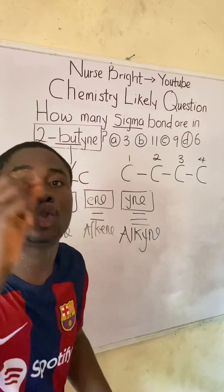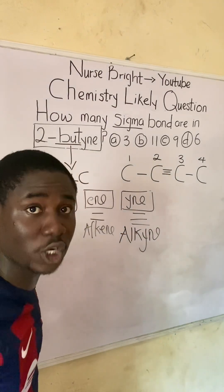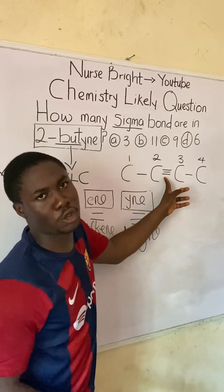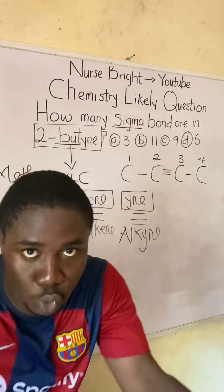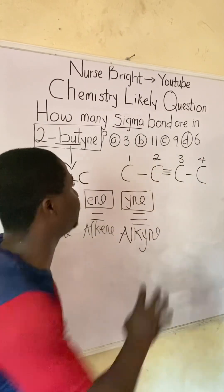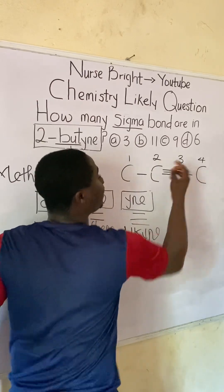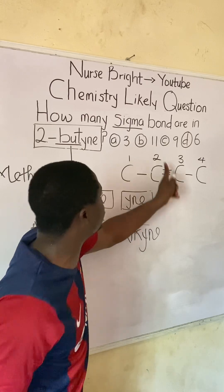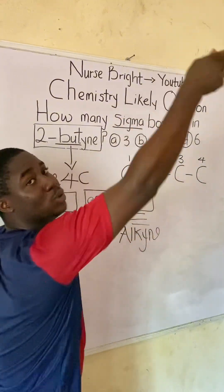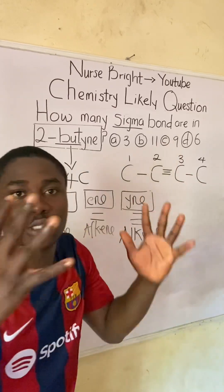They said the functional group is found at carbon 2, that is why it's called 2-butyne. So the triple bond goes here at carbon 2. Now you may wonder — this functional group is actually between carbons 2 and 3, so why do we call it 2-butyne and not 3-butyne? You have to note that your functional group should take the lowest number possible. Since it is between carbons 2 and 3, we ascribe it to the lower number — carbon 2. If the triple bond were between carbons 1 and 2, it would be 1-butyne.